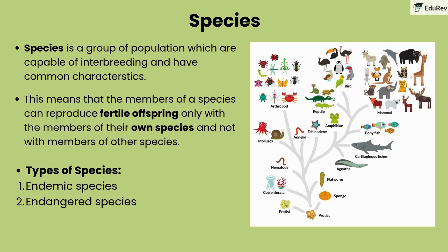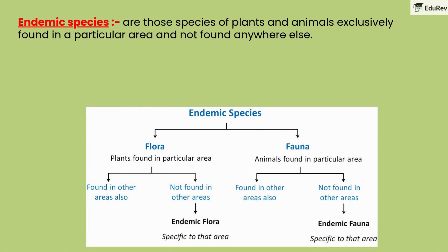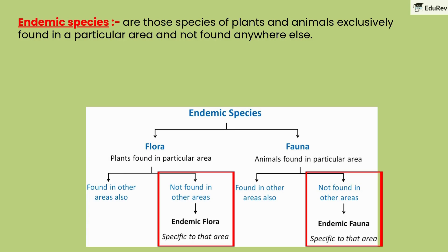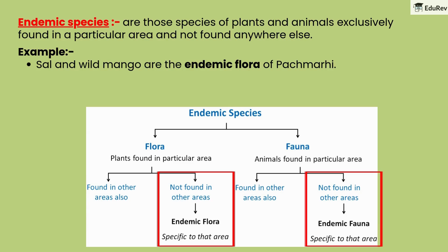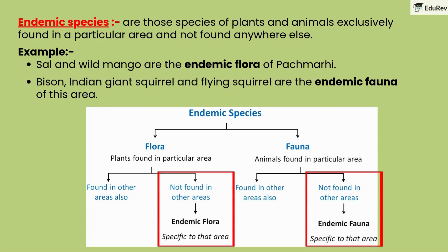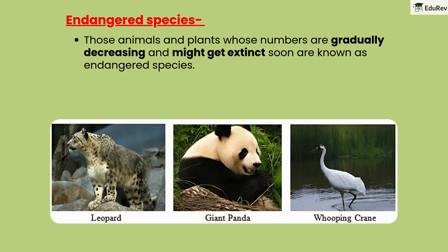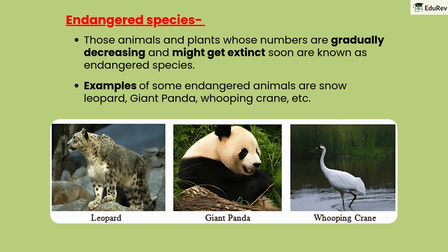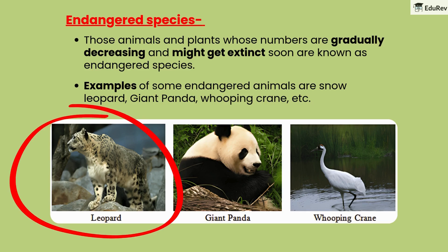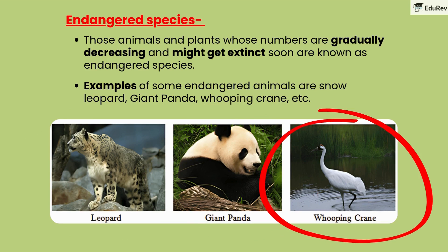There are two types of species: endemic species and endangered species. Endemic species are those plants and animals exclusively found in a particular area and not found anywhere else. For example, sal and wild mango are the endemic flora of Pachmarhi Biosphere Reserve, and bison, Indian giant squirrel, and flying squirrel are the endemic fauna of this area. Endangered species are animals and plants whose numbers are gradually decreasing and might become extinct soon. Examples include the snow leopard, giant panda, and whooping crane.